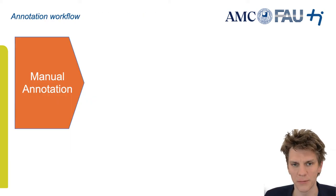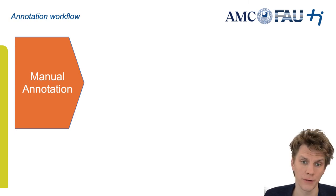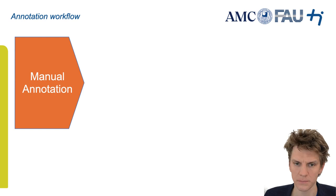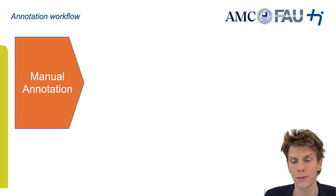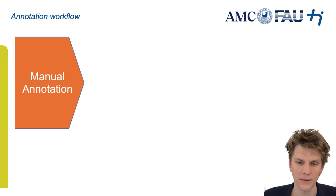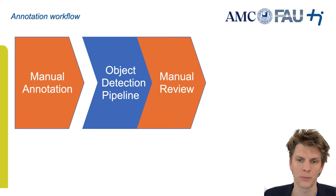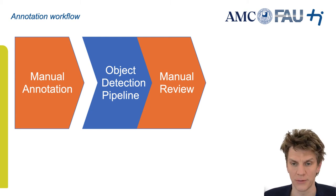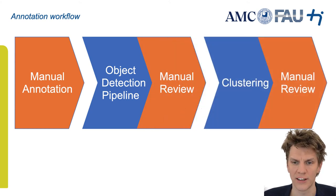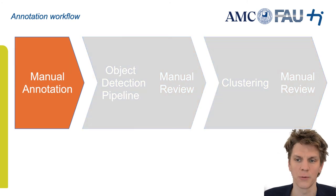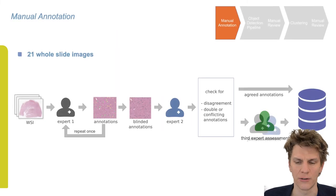To circumvent all these problems, we used the following workflow. First, a pathology expert screened the entire slide twice for manual annotation, followed by blind evaluation by a second expert and, in case of disagreement, a third expert. Second, we trained a network in a cross-validation manner to look for cells not yet detected by the first expert, followed by a manual review of the candidates. Finally, we used a clustering approach to find possibly misclassified cells, which were also manually reviewed.